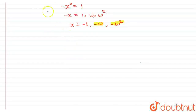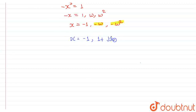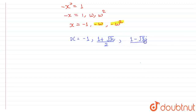So, how can I find the values here? I know that x is equal to minus 1, and the value of minus omega is negative 1 plus under root of 3 iota upon 2, and the value of minus omega squared is 1 minus under root of 3 iota upon 2.